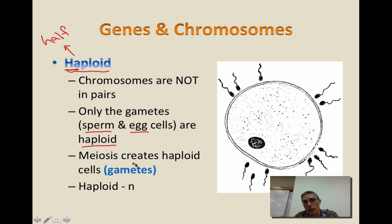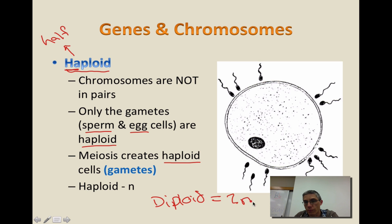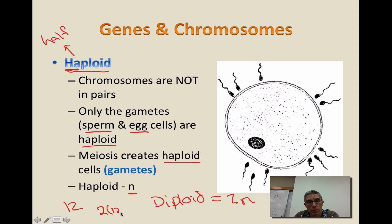Meiosis, the process we're going to look at in just a second, is going to create this haploid condition — it's going to allow us to produce the gametes. All of our body cells are considered diploid, having a full set of chromosomes, which you represent with 2N. Haploid cells, like sperm and eggs, are represented with the letter N. If we have an organism whose gametes have 12 chromosomes, the body cells of that organism, which are diploid, would have 2 times 12, which equals 24. So every body cell in that organism is going to have a full set of chromosomes numbering 24. That's the difference between N and 2N.